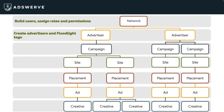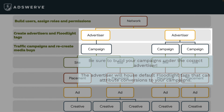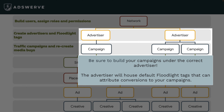Next is Campaigns, where you will likely be spending most of your time in Campaign Manager 360. This is where you traffic out your campaigns and recreate your media buys. You'll need to build your campaigns under the correct advertiser, since that advertiser houses the default floodlight tags that attribute conversions to your campaigns.